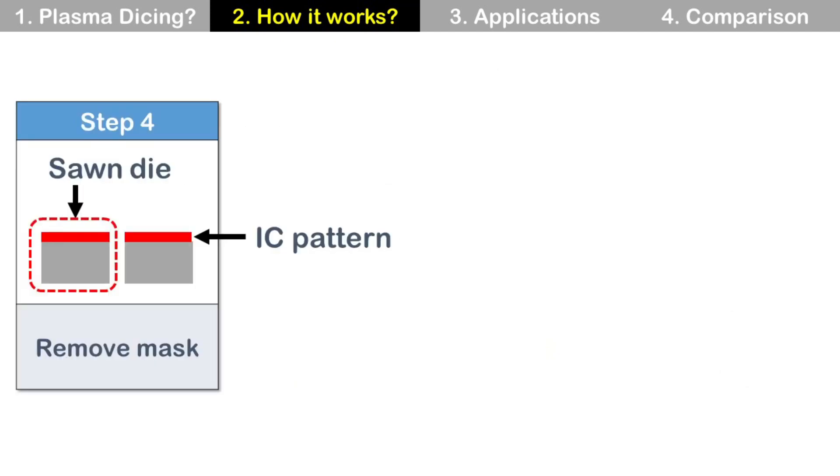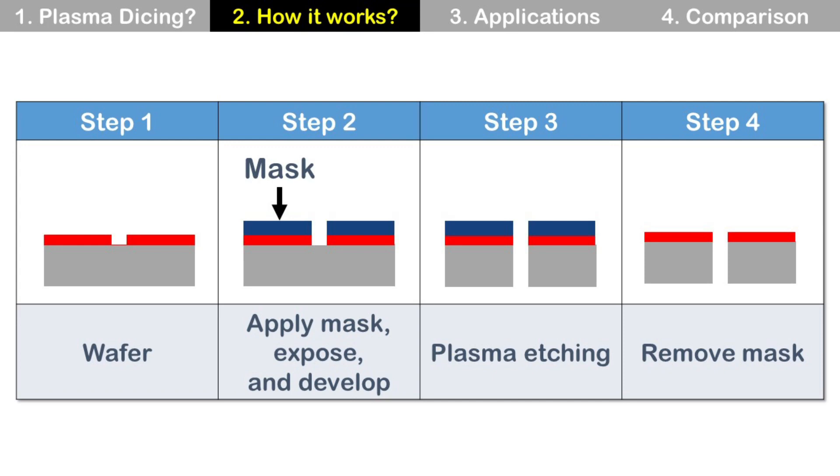Step 4: Remove mask. The mask is to protect the IC pattern on the wafer surface from plasma etching. So it is removed after plasma etching. This is the whole process in four steps.